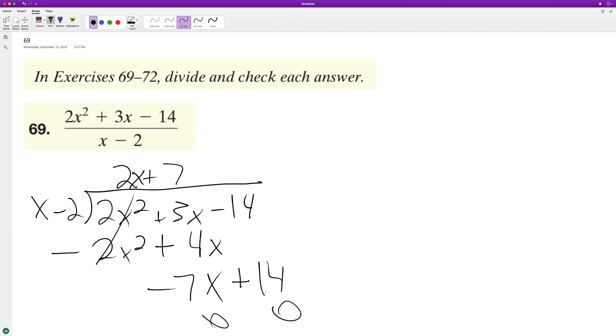So our factors are x minus 2 and 2x plus 7. Let's just check this. So x minus 2, 2x plus 7.